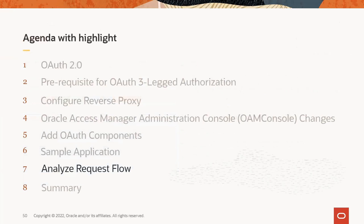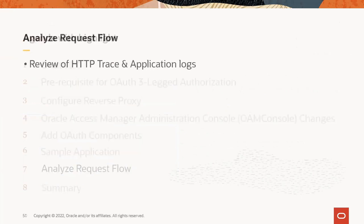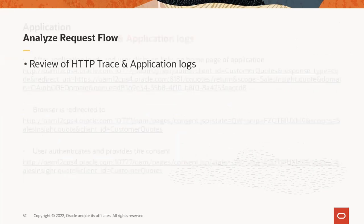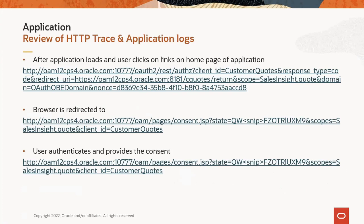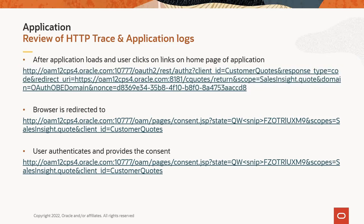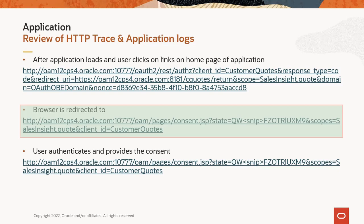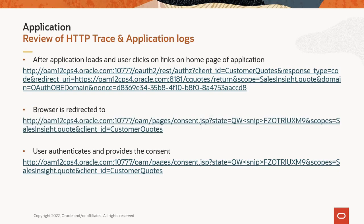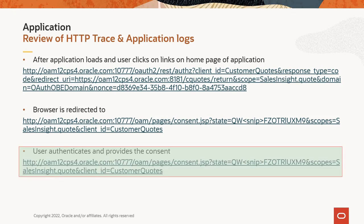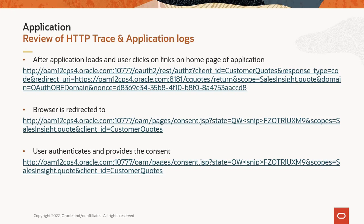We'll see what happens in the background. This topic reviews the request flow — the subtopic is a review of the HTTP trace and application logs. First, the user accesses the web application and clicks on urgent codes. The client sends the request to OAM at the endpoint with client ID, redirection URL, scope, and identity domain information — the URL is shown in the slide. OAM redirects the browser to the consent page; since it is protected, the user is asked to authenticate. On successful authentication, the user provides consent.